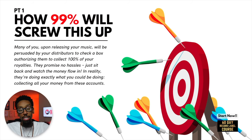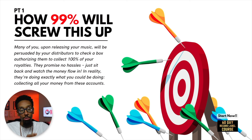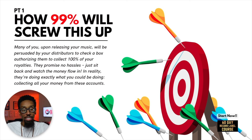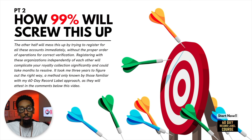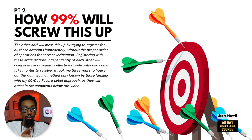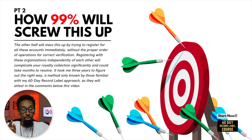How will 99% screw this up? Many of you, upon releasing your music, will be persuaded by your distributors to check a box authorizing them to collect 100% of your royalties — they promise no hassle, just sit back and watch the money flow in. In reality, they're doing exactly what you could be doing: collecting all your money from the accounts we talked about. The other half will mess up by trying to register for all these accounts immediately after watching this video without the proper order of operations for correct verification.